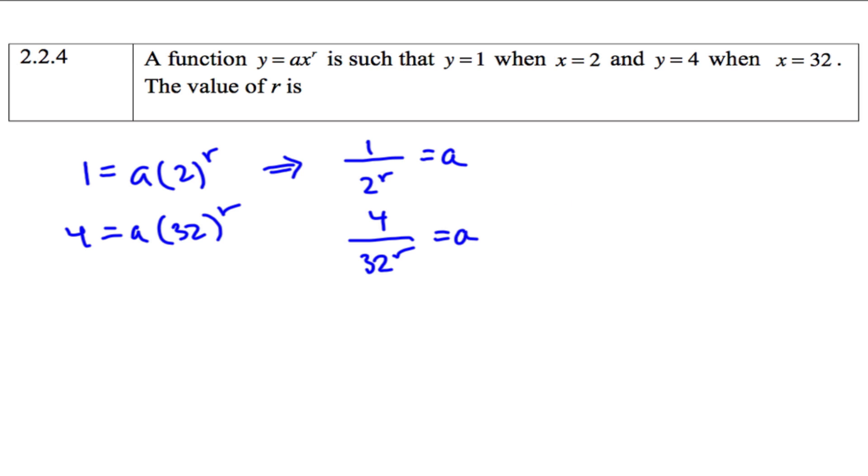And then I can set them equal to each other. So I'll have 1 over 2 to the r equals 4 over 32 to the r. And then I'm going to cross multiply. So I'll just go down here. Cross multiply, I have, well I'll just multiply by 32 to the r on both sides. And I'm left with this.